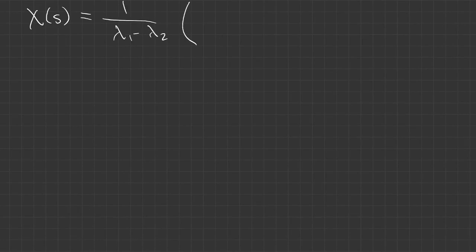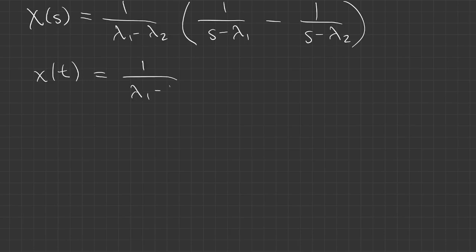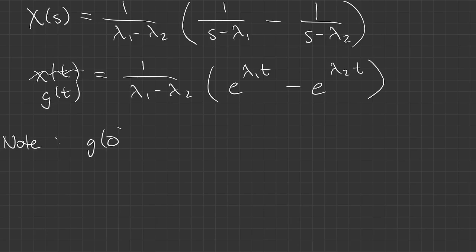Now we know our partial fraction decomposition, and we can invert it to find our impulse response. So x is the solution of our impulse problem, I should really call this g of t. One thing to note, g of 0, you can see, is 1 minus 1, so it's just 0. But g prime of 0 is lambda 1 times 1 minus lambda 2 times 1 divided by lambda 1 minus lambda 2, so g prime of 0 is just 1.